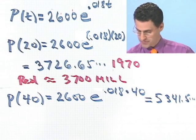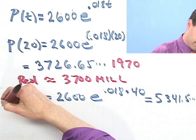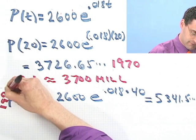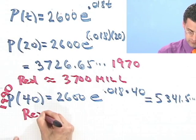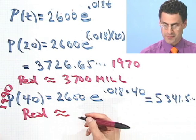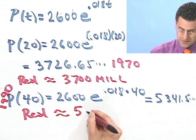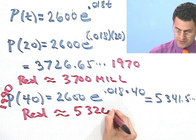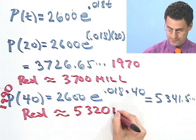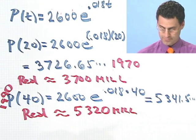What was it for real? Well, the real population was 5,320,000,000 people. Look how incredibly close those answers are. This predicted one and the actual one.